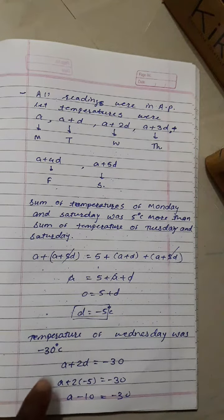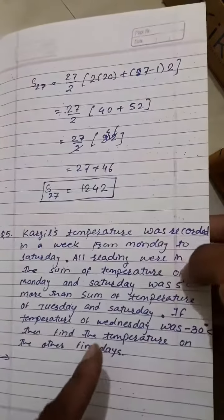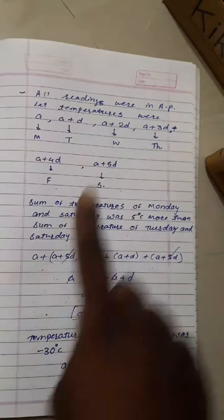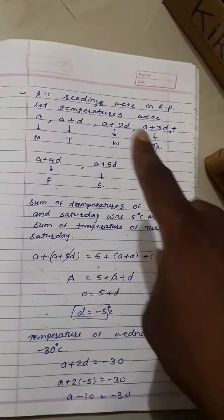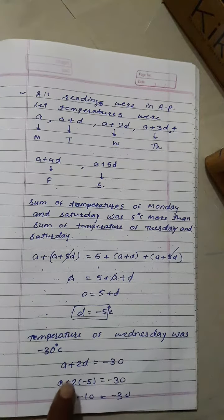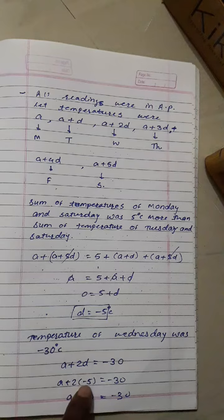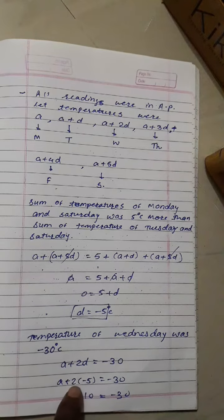So the temperature difference is minus 5. The temperature of Wednesday was minus 30. Second condition: Wednesday is A plus 2D, which equals minus 30. Substituting D equals minus 5 gives A minus 10 equals minus 30.